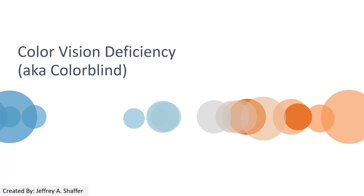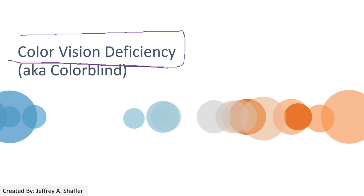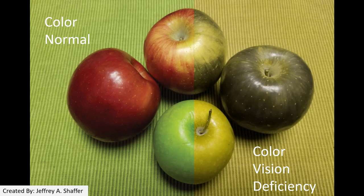Let's talk about another important perspective of color called color vision deficiency (CVD). When we use color in data visualization, we should be very careful because many people have CVD. This is an example showing how people with normal color vision see apples on a green table, and on the right side, how people with CVD perceive those same apples.